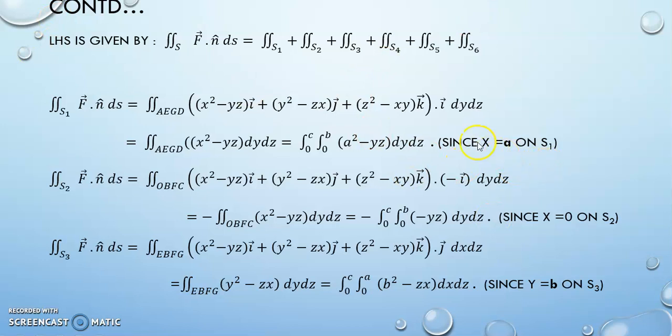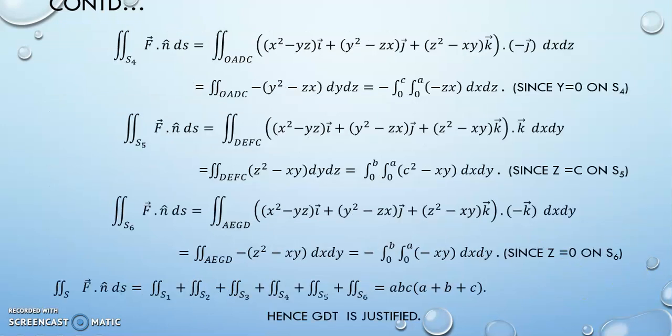So, always remember, when you are taking the x value, x is equal to a and x is equal to 0. And then you will go for y is equal to b and y equal to 0. And next you will be going to z equal to c and z equal to 0. So you will be varying 6 surfaces.